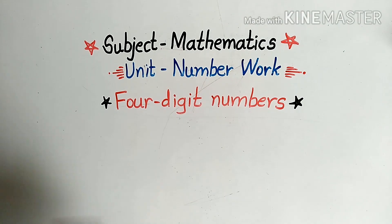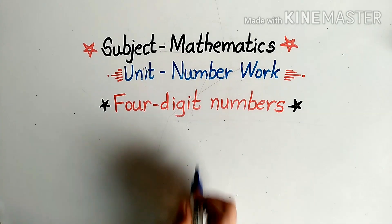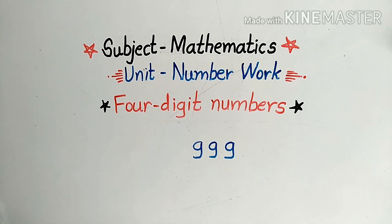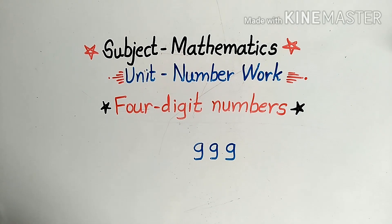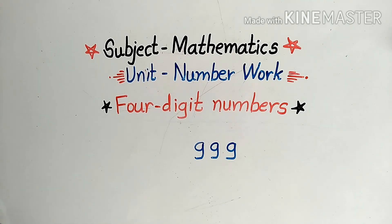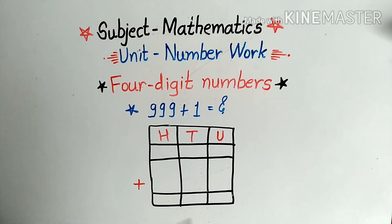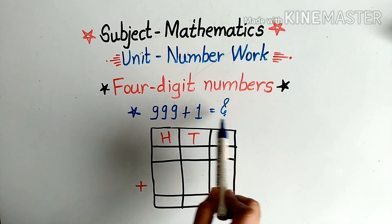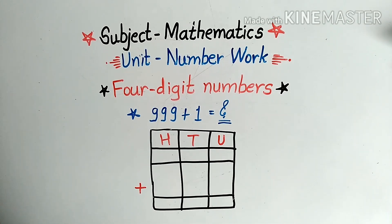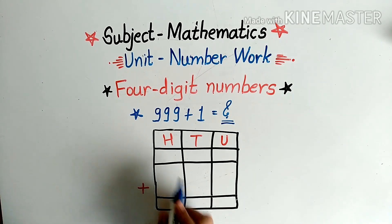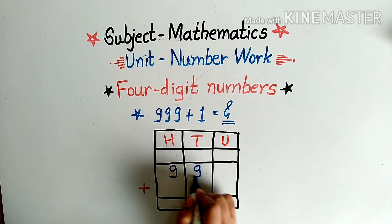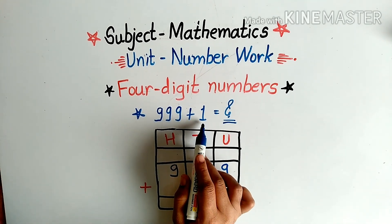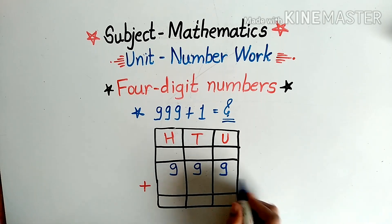So which is the biggest three-digit number? Yes, nine hundred and ninety-nine is the biggest three-digit number. Now let's add one to this number. We are going to solve the addition 999 plus 1. First, I will write down these numbers in the boxes: 999 plus 1. One is the unit, so we will place it in the units box.